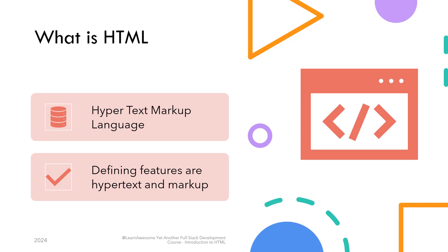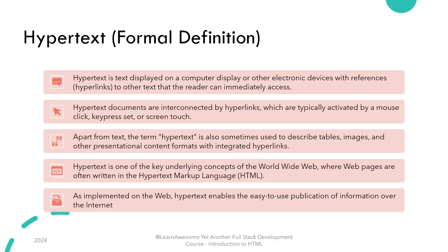What is the importance of hypertext? Formally, hypertext is text displayed on a computer display or other electronic devices with references or hyperlinks to other text that the reader can immediately access. Hypertext documents are interconnected by hyperlinks, which are typically activated by a mouse click, key press, or screen touch. Apart from text, the term hypertext is also sometimes used to describe tables, images, and other presentational content formats with integrated hyperlinks. Hypertext is one of the key underlying concepts of the World Wide Web, where web pages are often written in the HyperText Markup Language, or HTML. As implemented on the web, hypertext enables the easy-to-use publication of information over the internet.